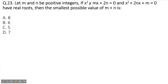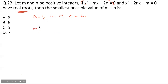The first equation is a quadratic with coefficient of x² as 1, coefficient of x as m, and constant term 2n. A quadratic has real roots when b² - 4ac ≥ 0, so m² - 4(1)(2n) ≥ 0, which gives m² ≥ 8n.